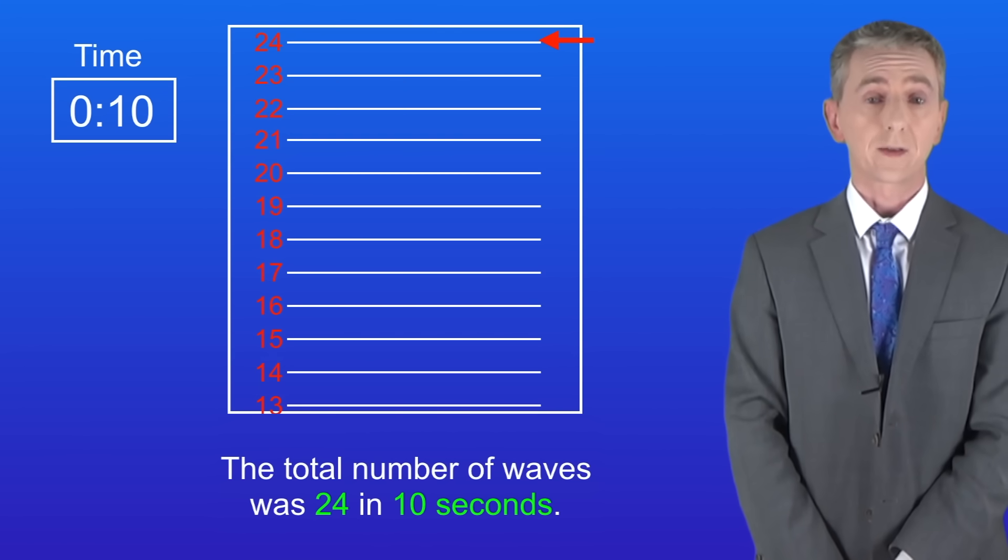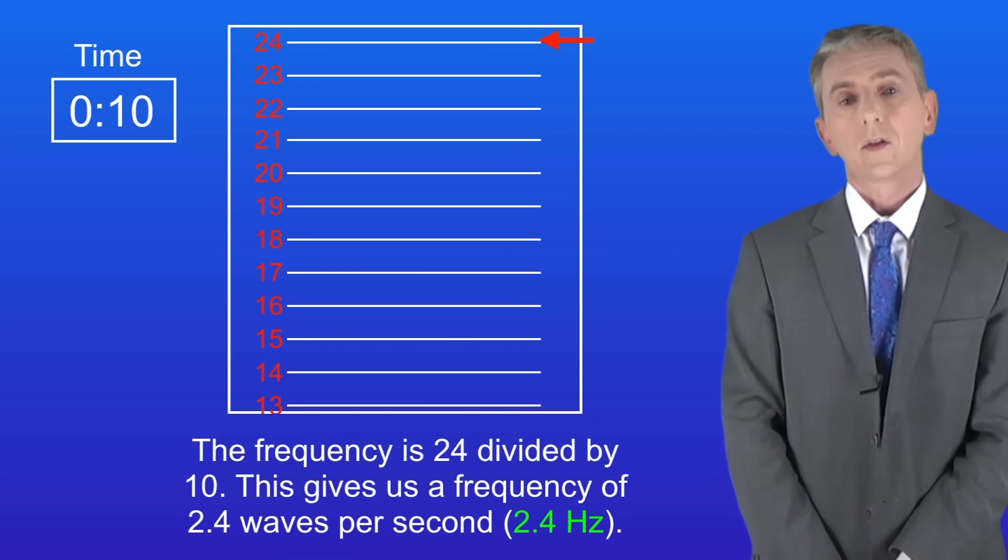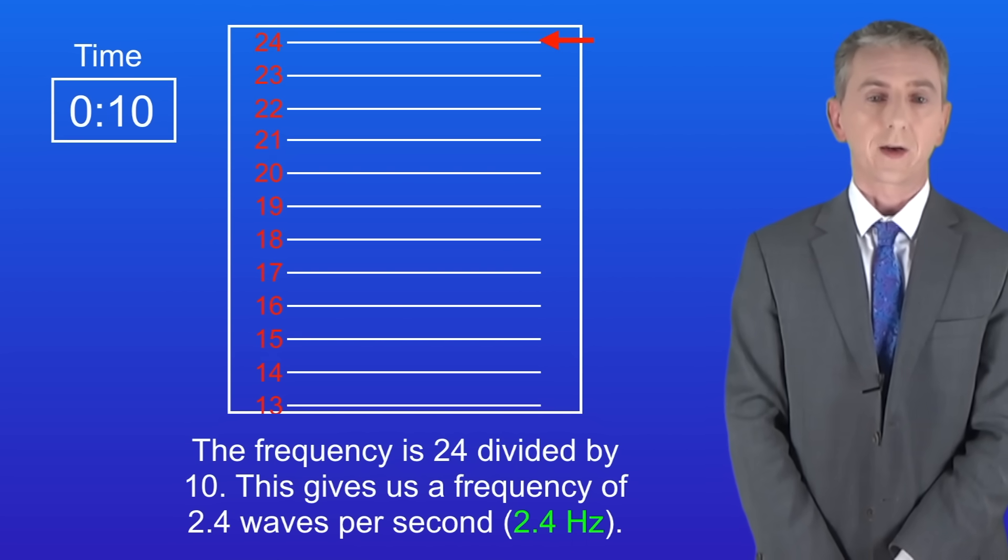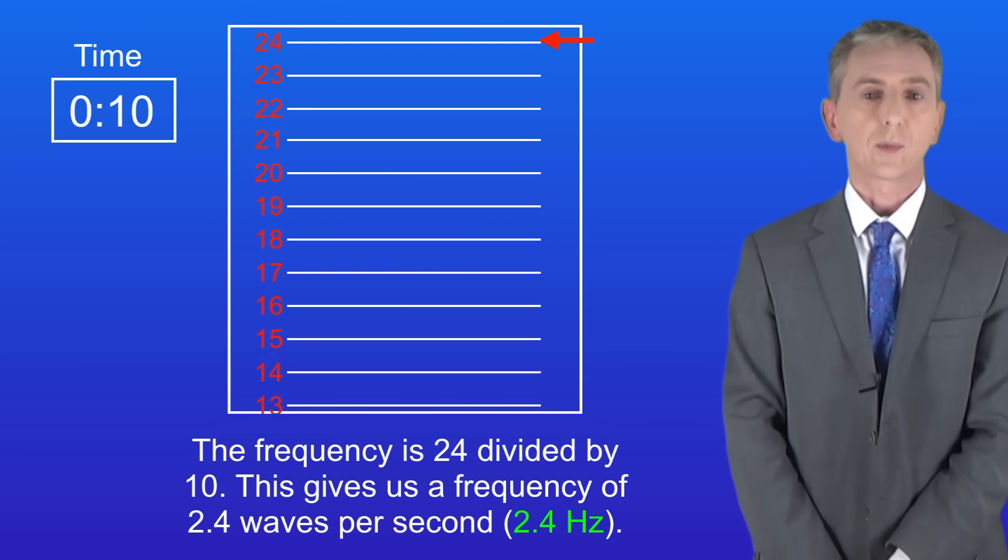The total number of waves was 24 in 10 seconds. So the frequency is 24 divided by 10. This gives us a frequency of 2.4 waves per second, in other words 2.4 hertz.